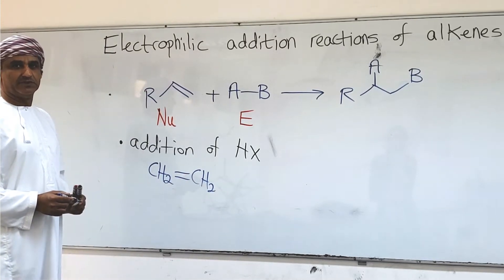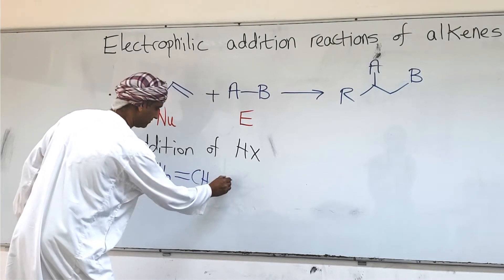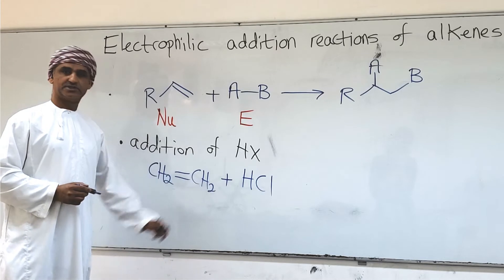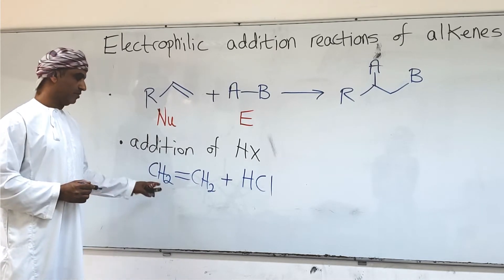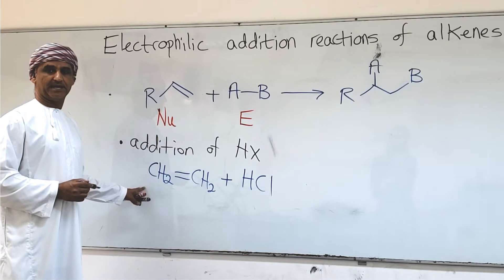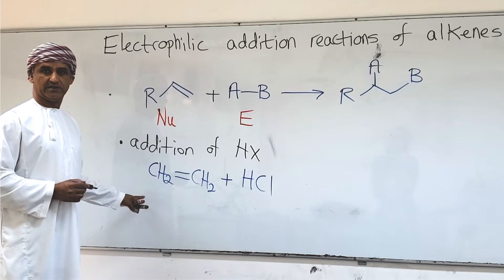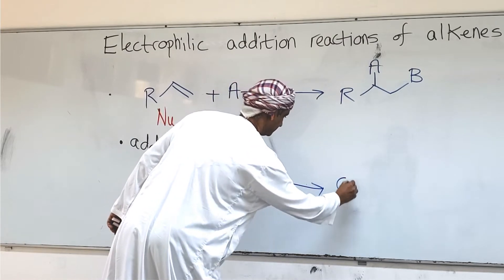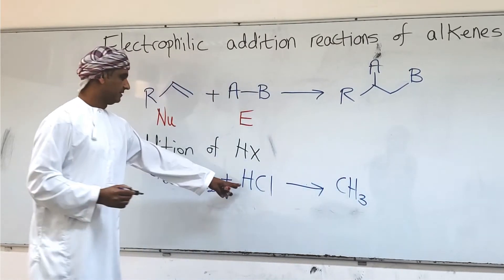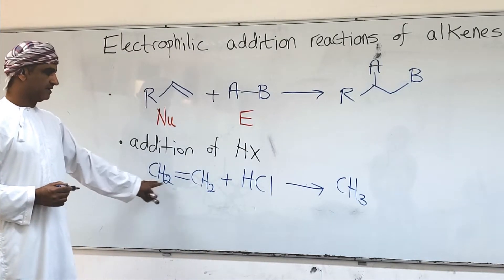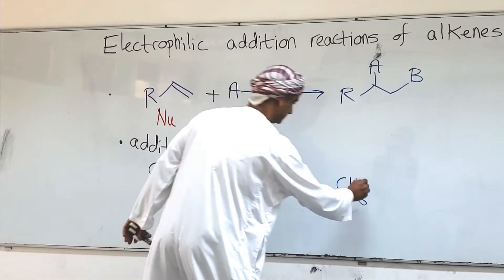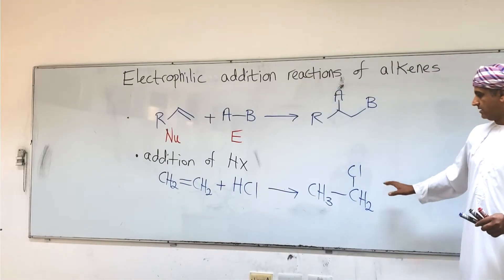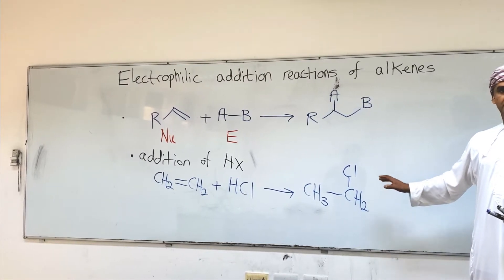There is a carbon-carbon double bond between the two carbon atoms in ethylene. If we react ethylene with HCl, you would expect the hydrogen atom of HCl to bond with one of the carbon atoms and Cl to bond with the other, breaking the pi bond. So if we bond the hydrogen of HCl to one carbon, we get CH3 on that side and Cl bonds to the other carbon. This is the addition product of the reaction of ethylene with HCl.